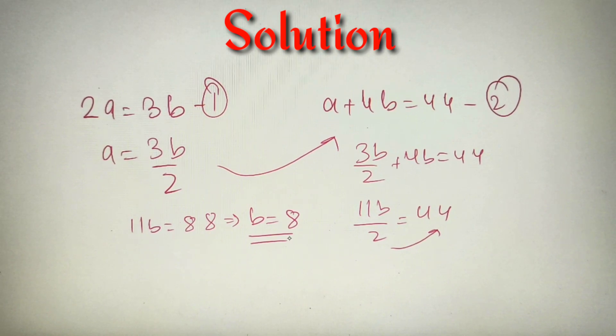So we have got the value of variable B as 8. Now we know that A = 3B/2, so the value of A equals 12, because 3 times 8 is 24, and 24 by 2 is 12.